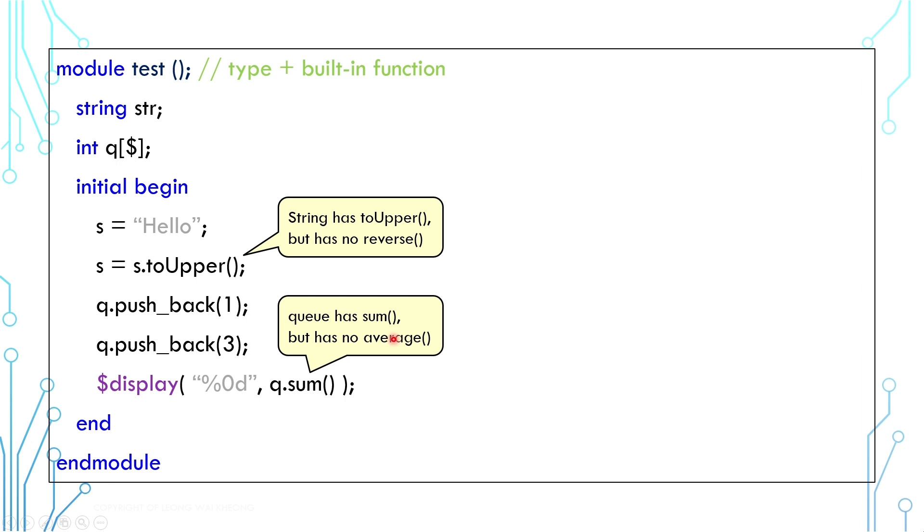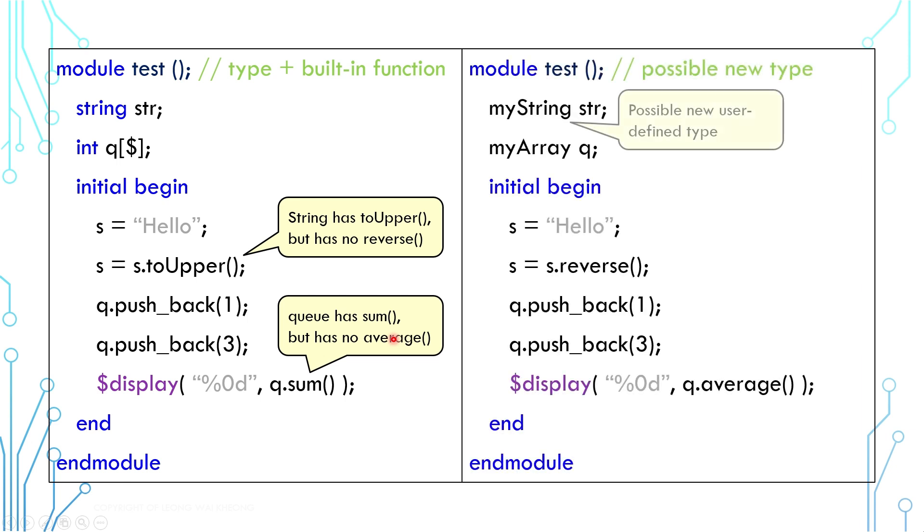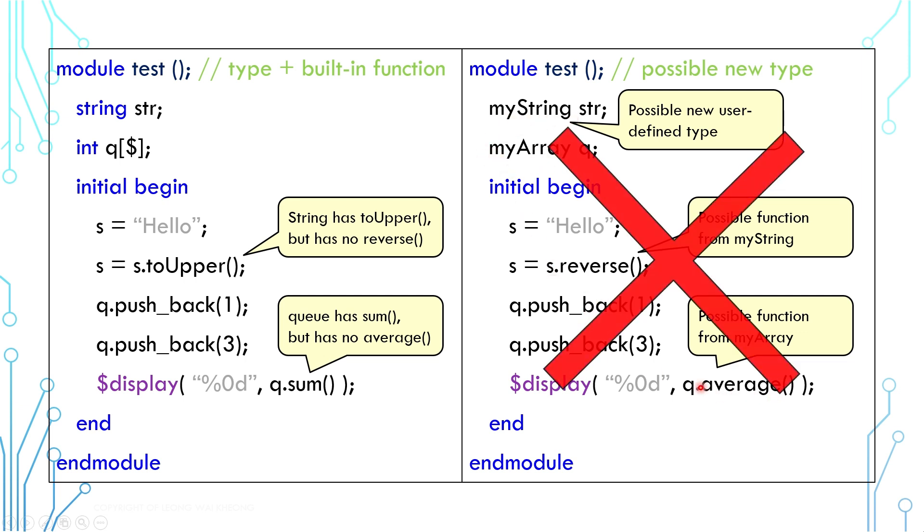Now, either we can ask and wait for the language committee to add the functions into the native types, or maybe we can create our own type. This is how it possibly looks like. These are new user defined types, and these are the functions they support. Of course, this is not a legitimate code. This is just to give you the general idea.